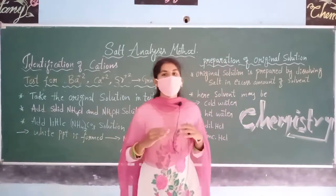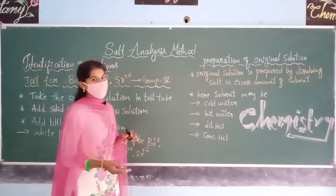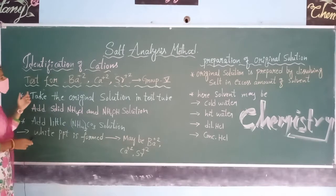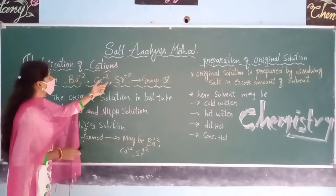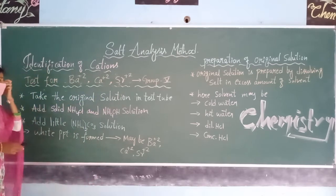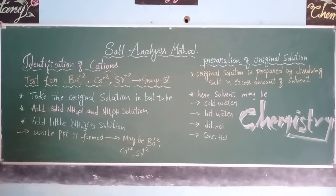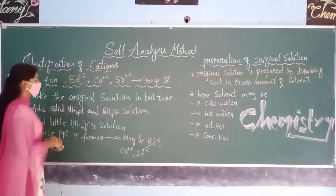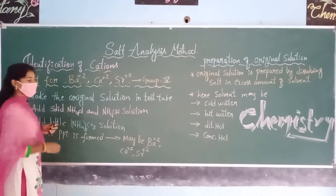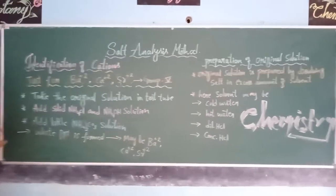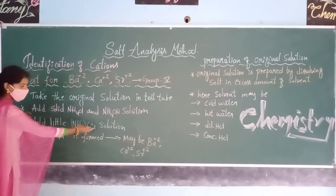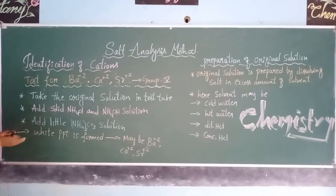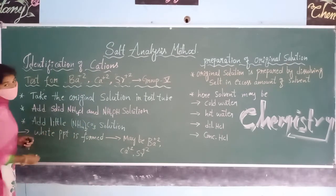After the original solution is prepared, we take that same solution for testing the cations — barium, calcium, and strontium. First, we add solid NH4 crystals along with NH4OH solution to the prepared original solution. Then we also add a small amount of ammonium carbonate solution to the same solution.